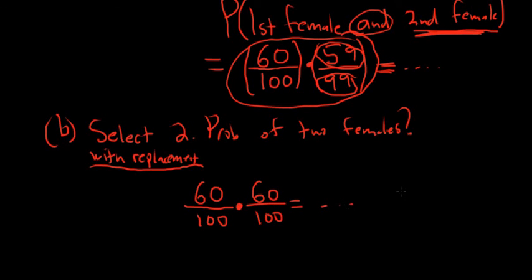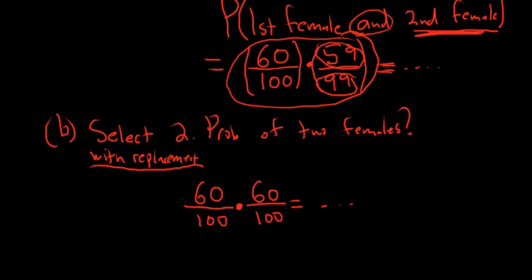Then you would put this in your calculator and you would get the answer. The default is without replacement. So up here, this is without replacement. That is the default. Alright, that's it.